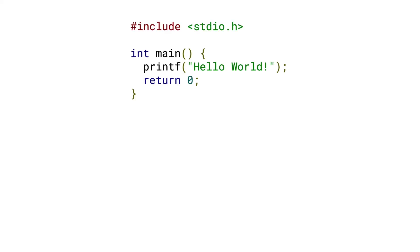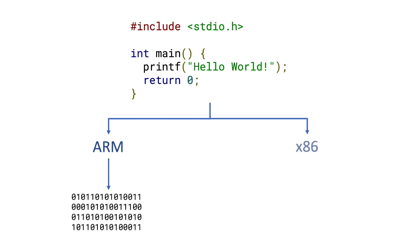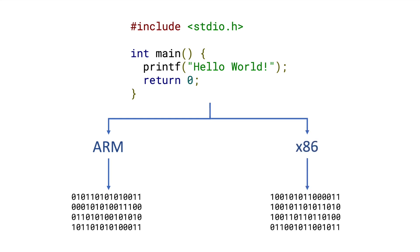For example, a CISC architecture might include a single instruction to add three registers, whereas a RISC architecture would just tell you to do two separate add instructions. But here's the thing: unless you're writing assembly code, which you most likely aren't, the underlying architecture doesn't really matter to you. Let's say you're writing some code in C. When you want to run the code, you have to put it through a compiler, which will translate the human readable code into binary instructions. If you put the code through an ARM compiler, you'll get ARM instructions. If you put the code through an x86 compiler, you'll get x86 instructions. So if you're using C, or any language above assembly, the underlying architecture doesn't matter to you.